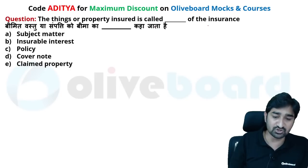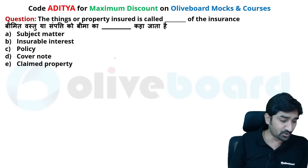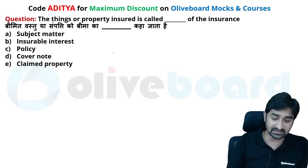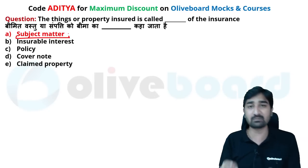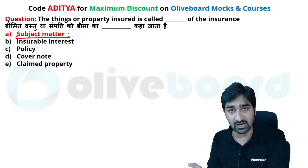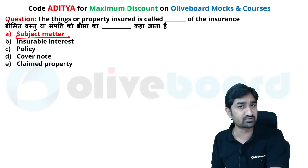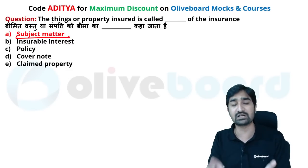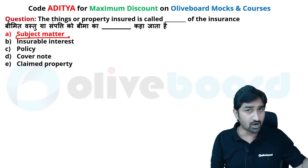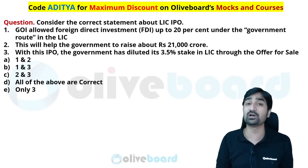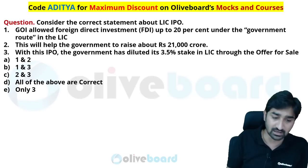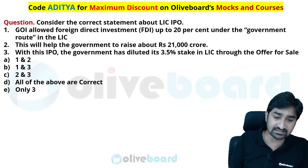The things of property insured is called which of the following? That is called subject matter. For example, if I am taking car insurance, the car will be called the subject matter. If I am taking insurance against a house, the house is called the subject matter — that property is called the subject matter.